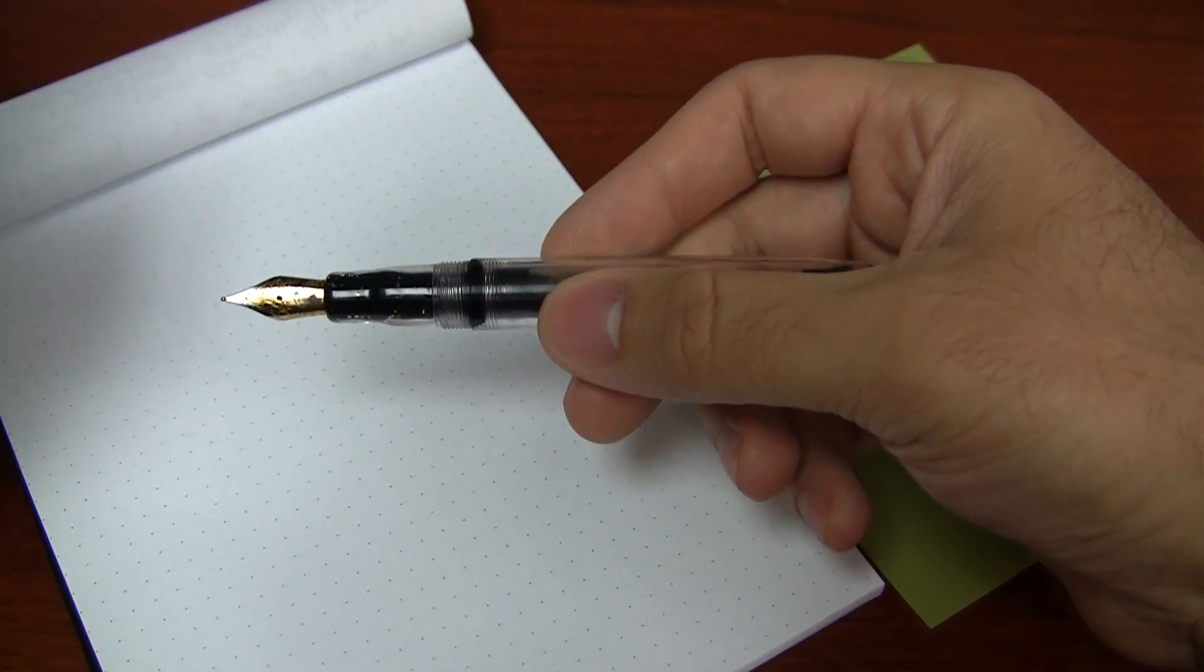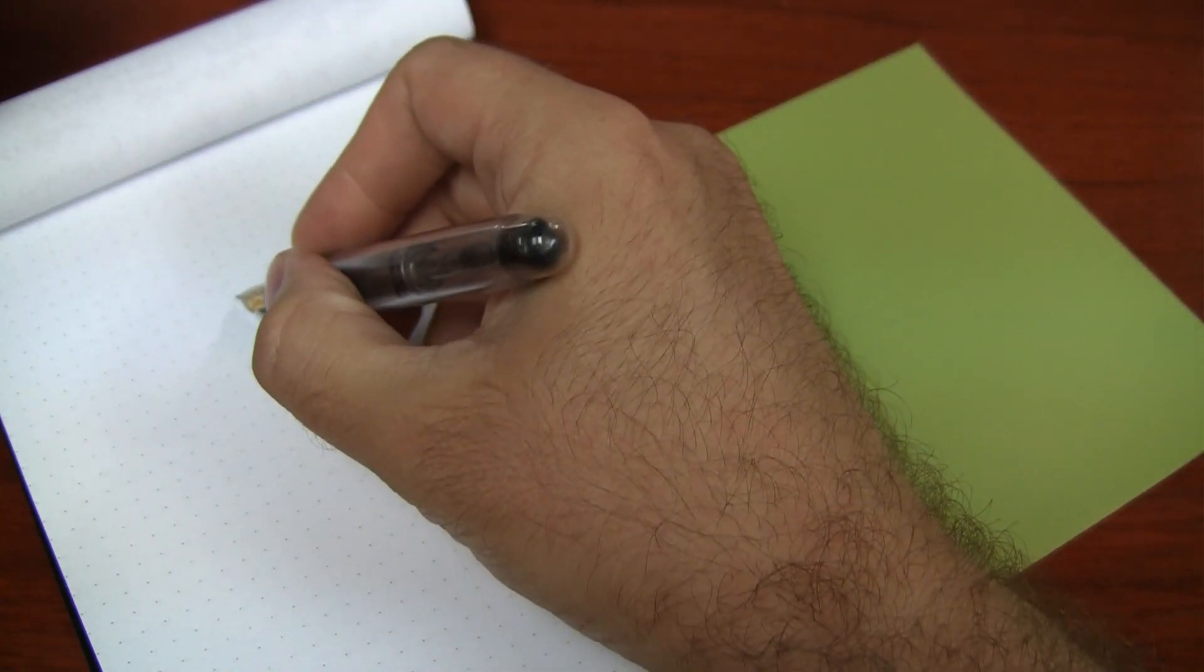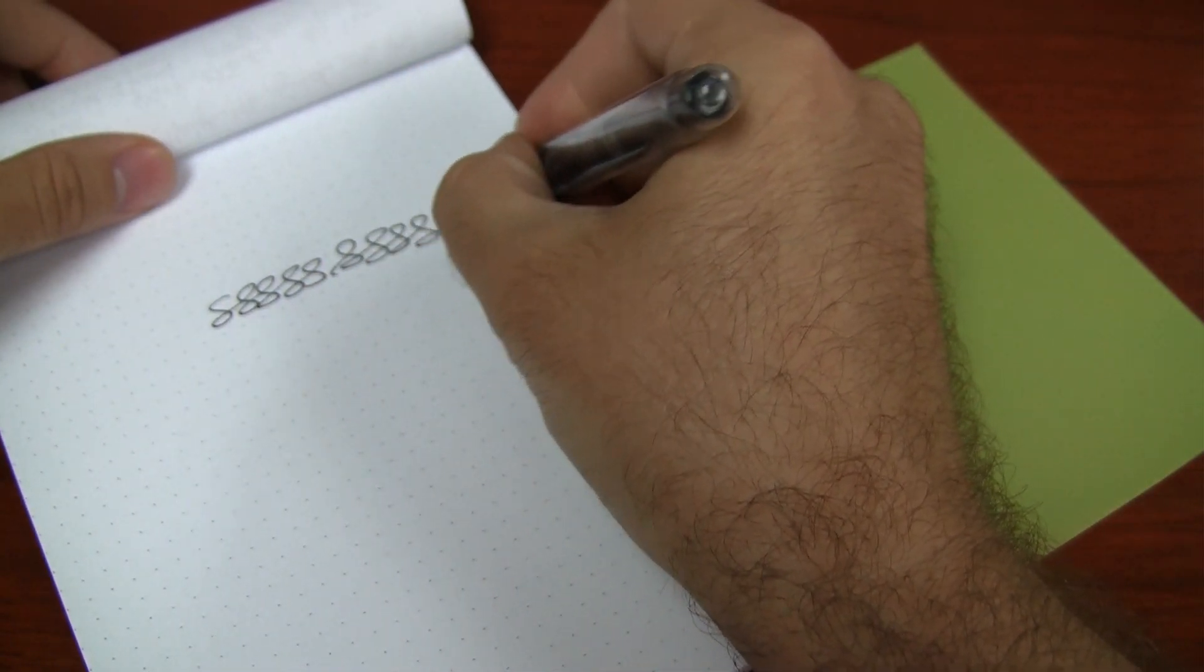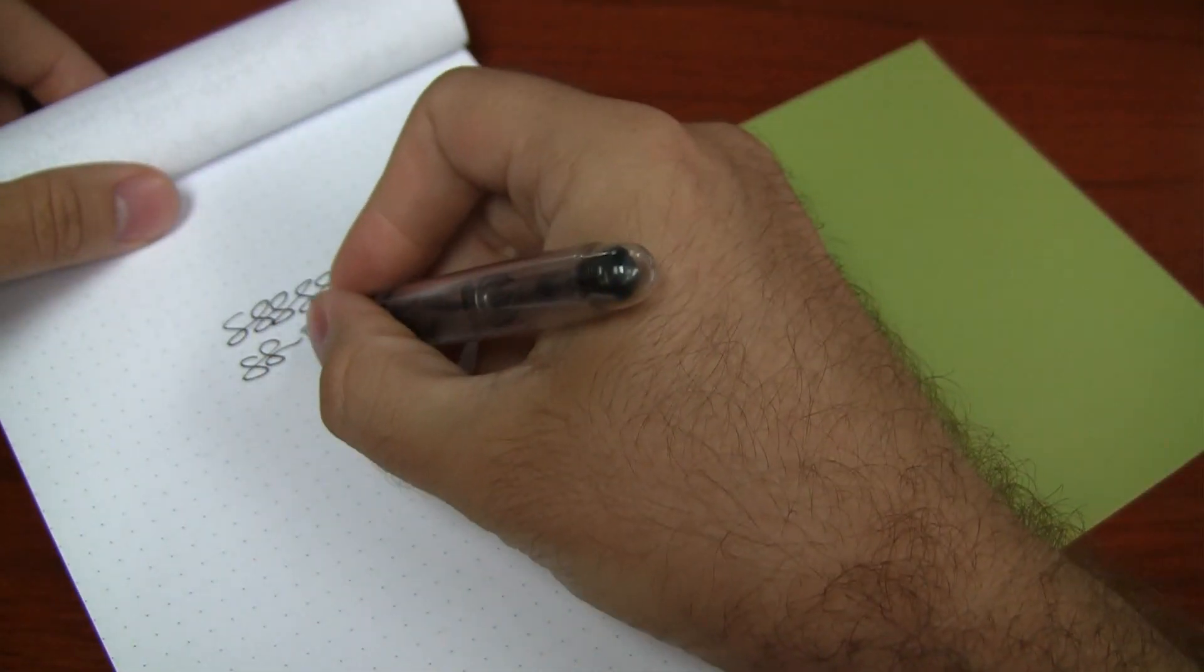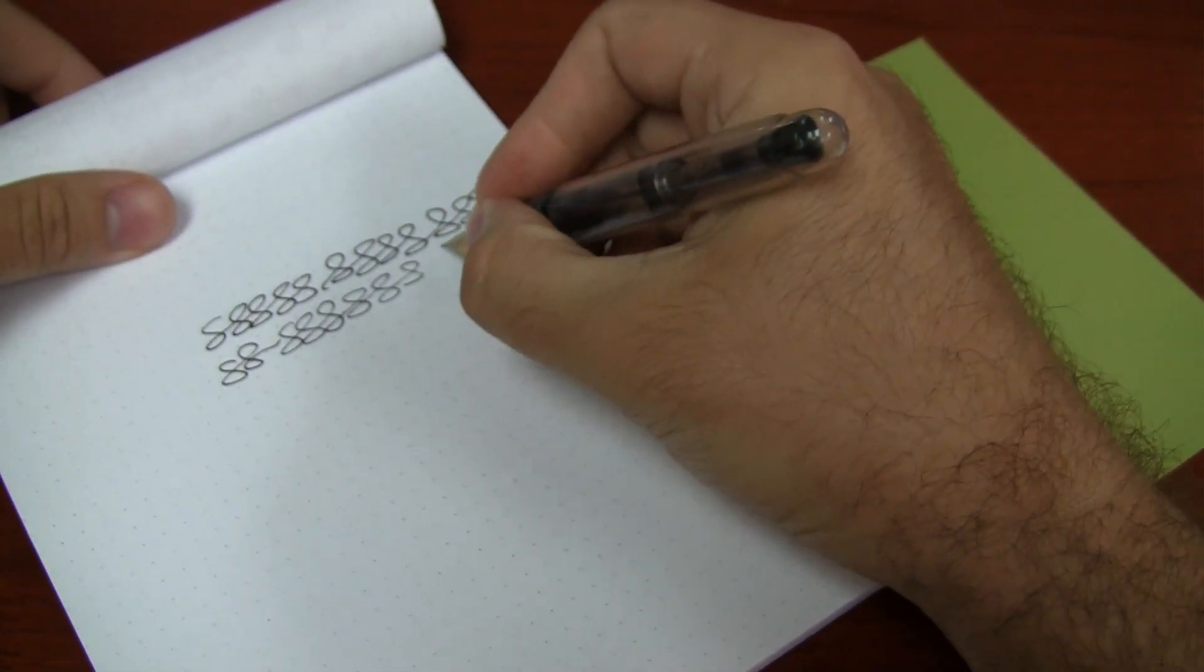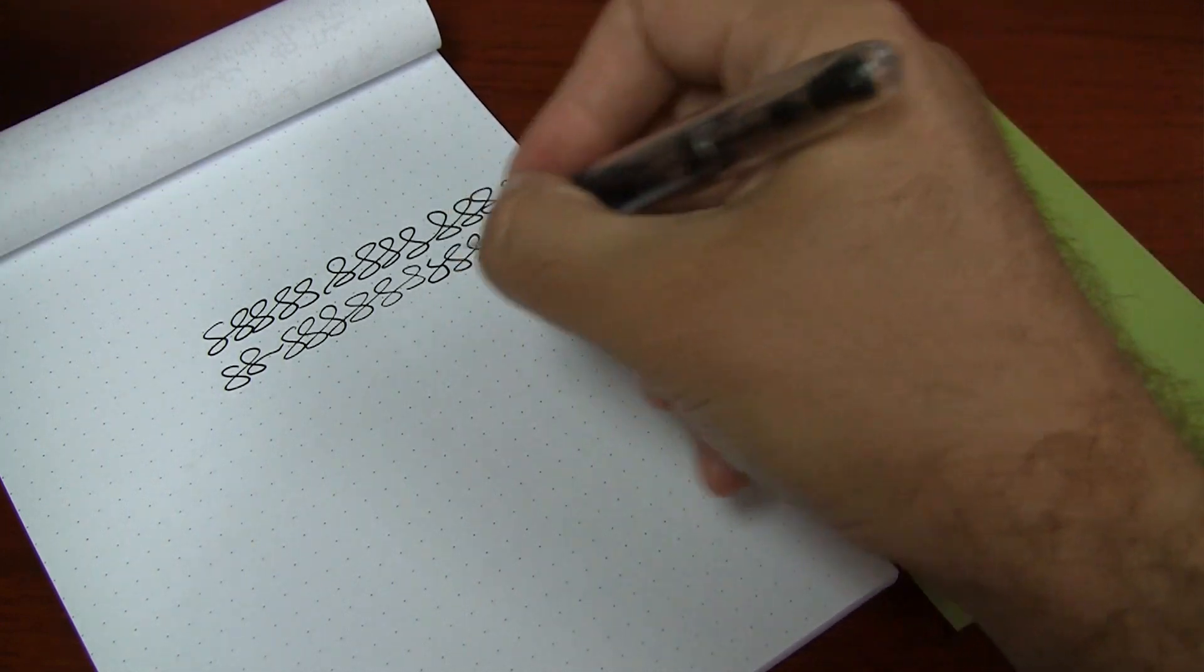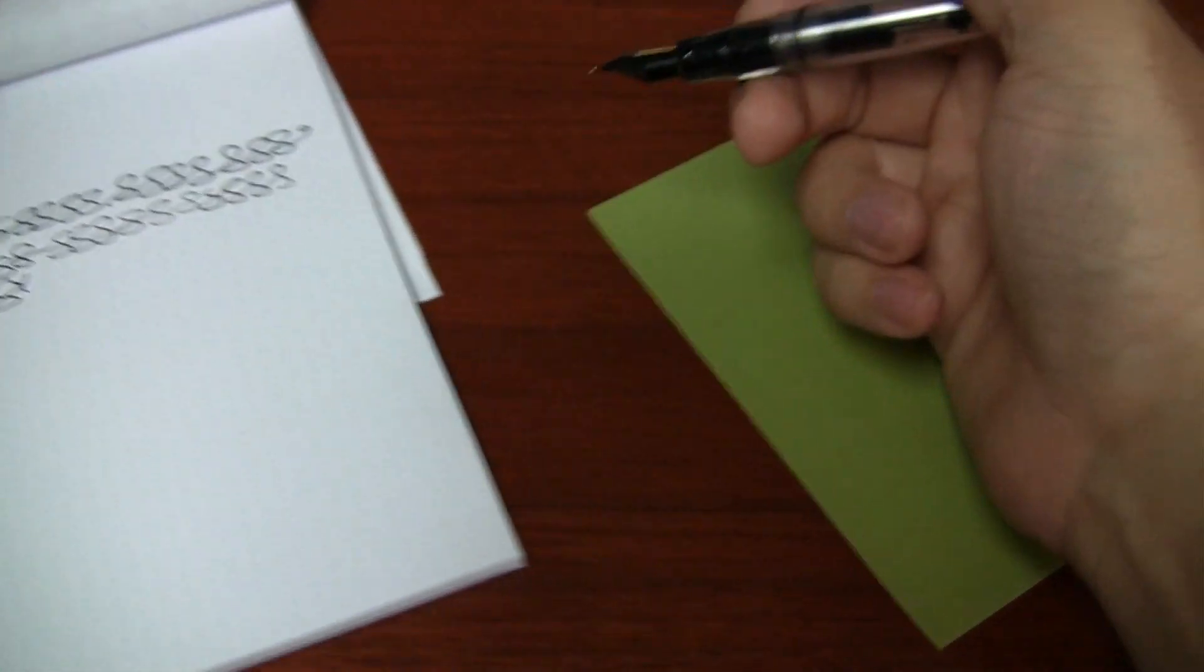So I've inked up my pen with my nib that I would like to smooth to a greater degree. And I'm going to first just make some figure eights, make sure my ink is flowing well. Get a sense for how smooth the nib is just on its own on the paper. I'm just trying to make simple figure eights. And the reason I like the figure eight pattern is because you get kind of the full range of the nib, because you're kind of moving in every direction as you're doing these figure eights.